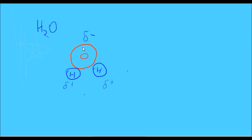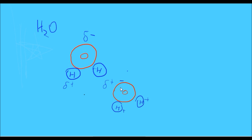Given that oxygen has a slight negative charge and hydrogen has a slight positive charge, they are able to attract one another. We have one water molecule here, and now let's create another water molecule with its oxygen atom and two hydrogen atoms. The negative charge of this oxygen atom is going to be attracted to the positive charge of this hydrogen atom, so that a weak connection is formed between these two molecules.